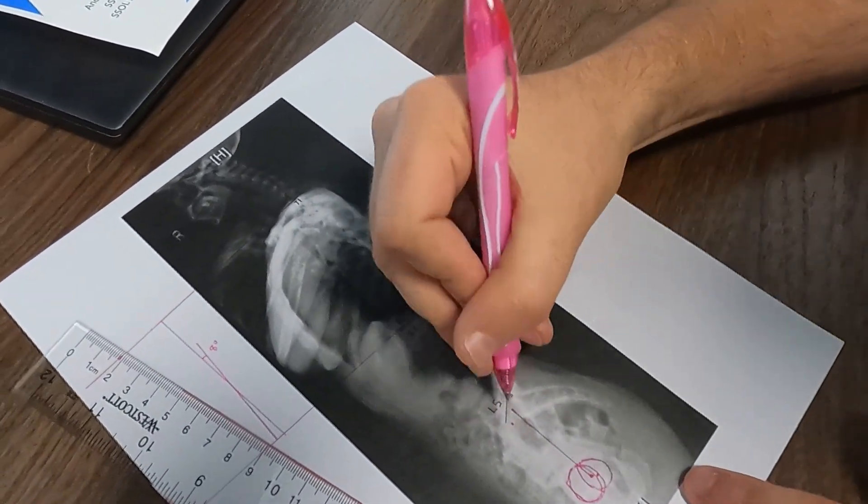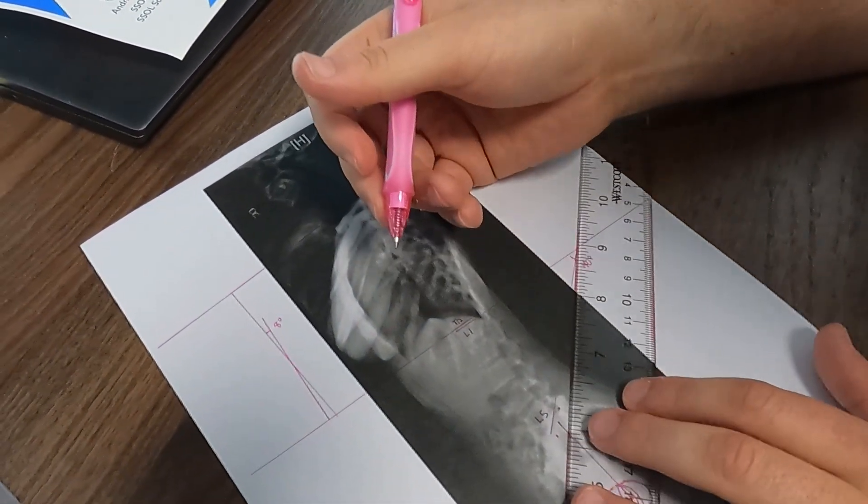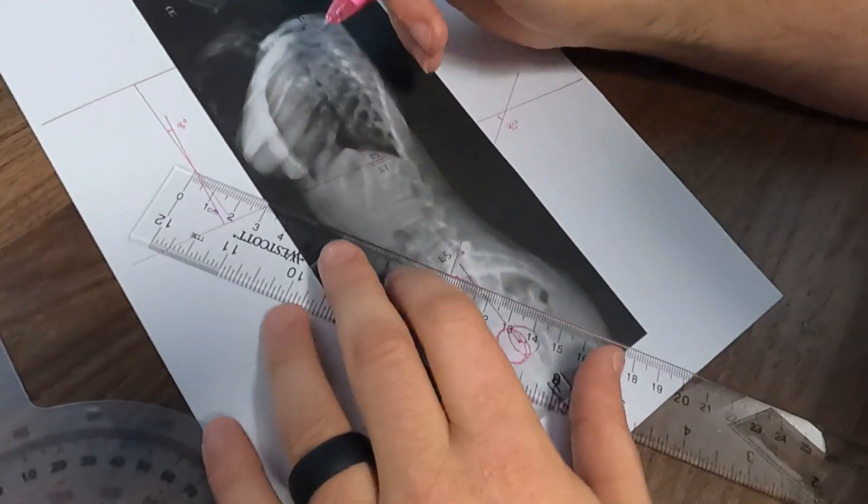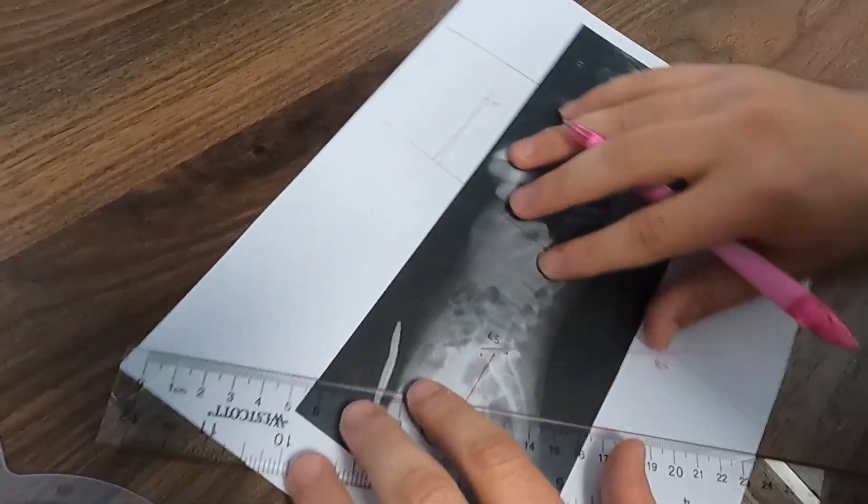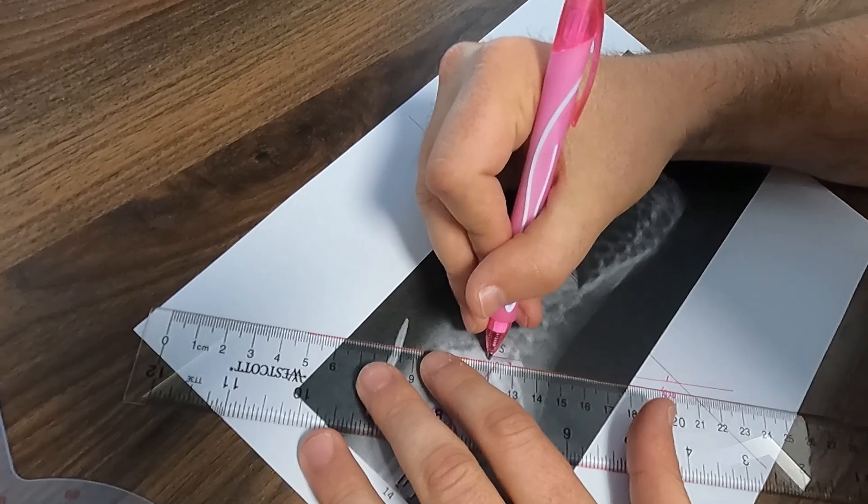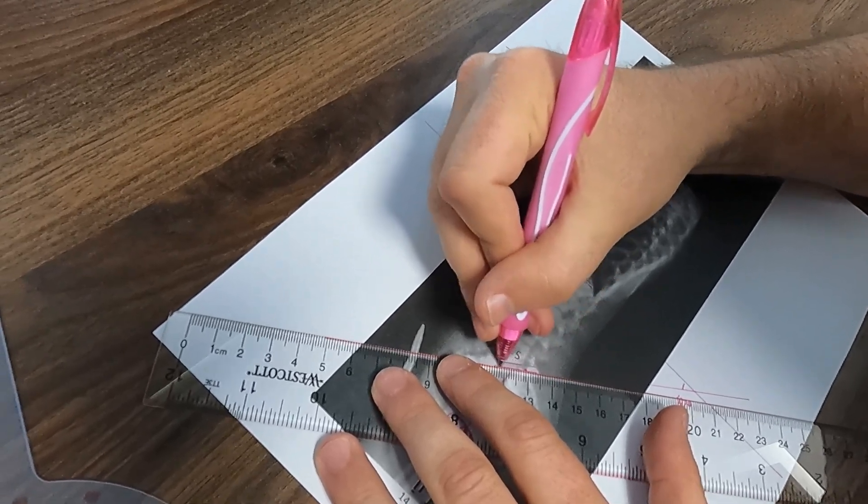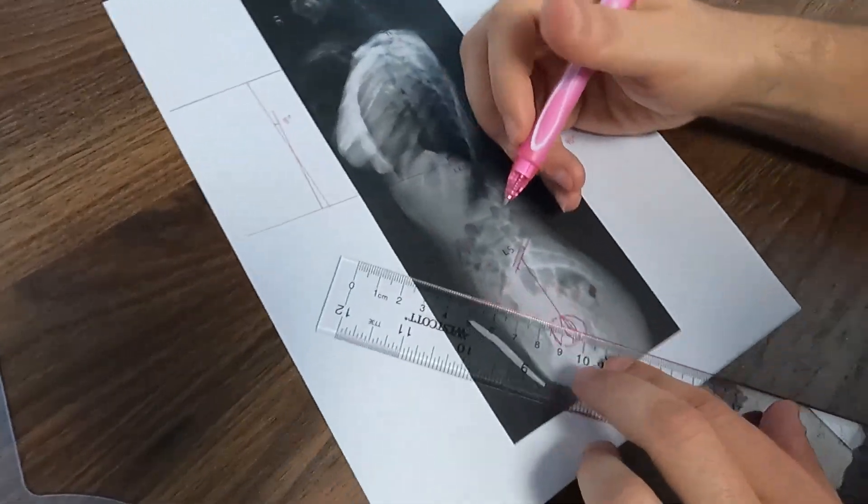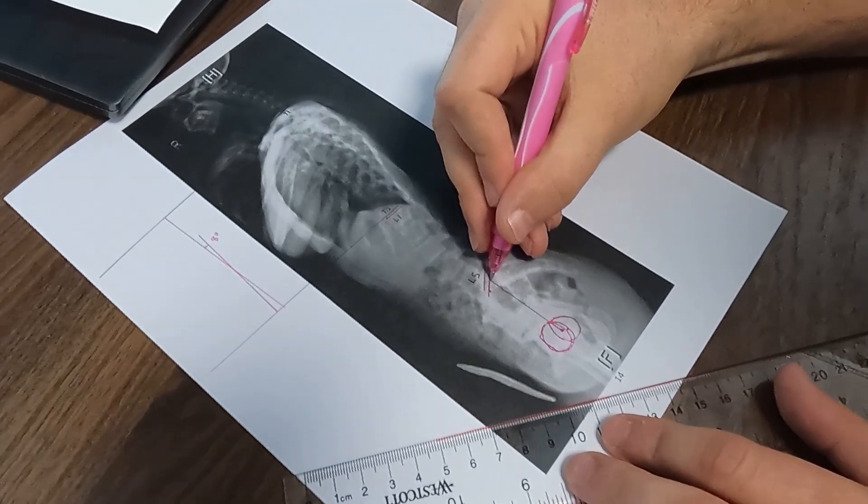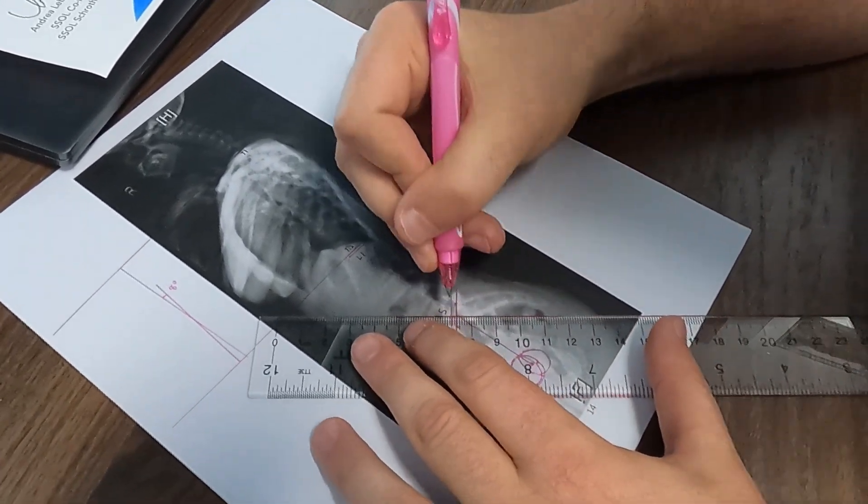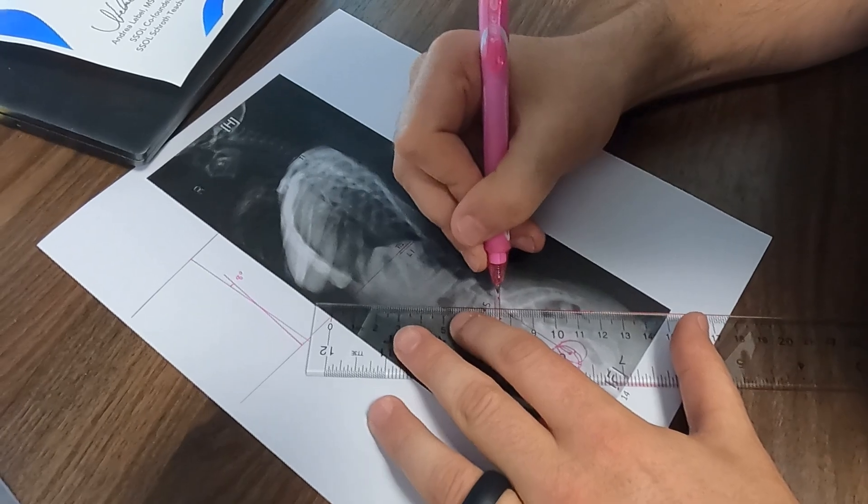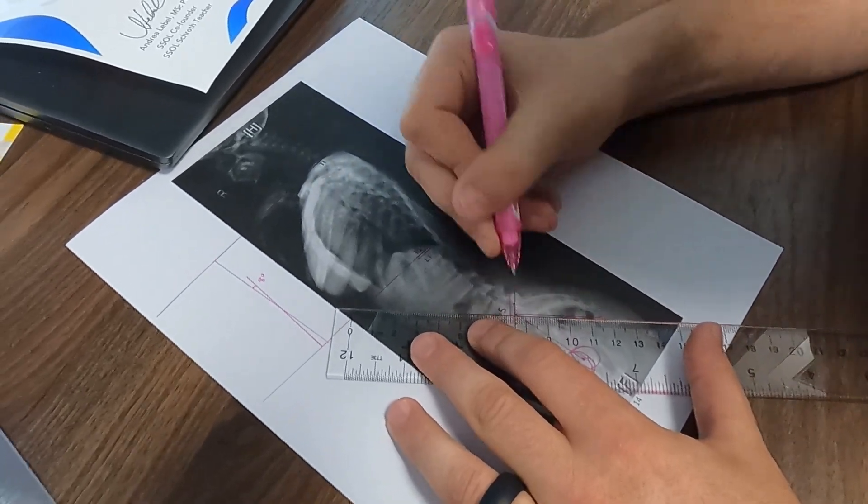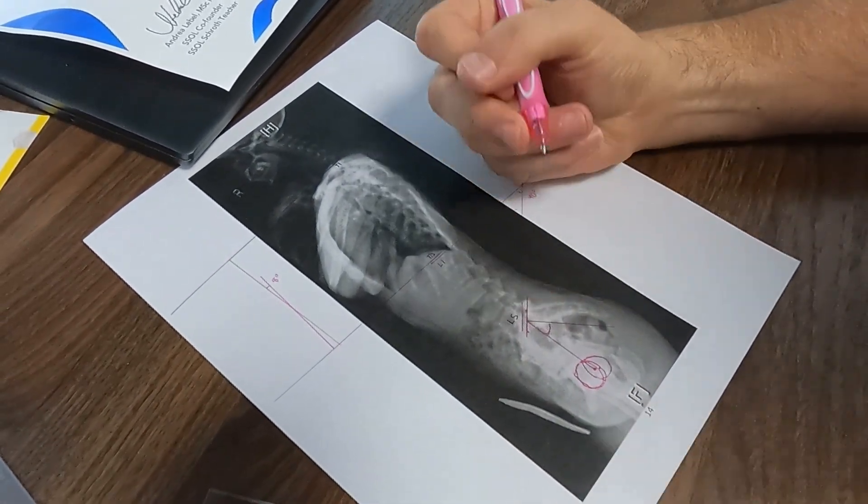The last thing that we're going to do is we're going to take the sacral slope, and we're going to go perpendicular to the sacral slope. So we'll draw the sacral slope first. We find that center spot again on the sacrum. We're going to go perpendicular. And then we're going to measure this angle.